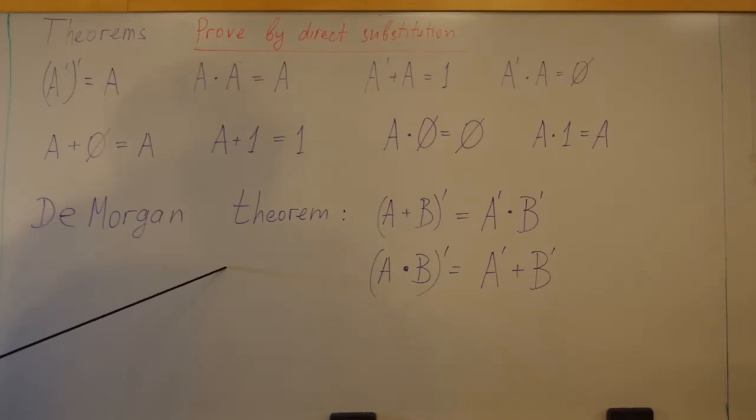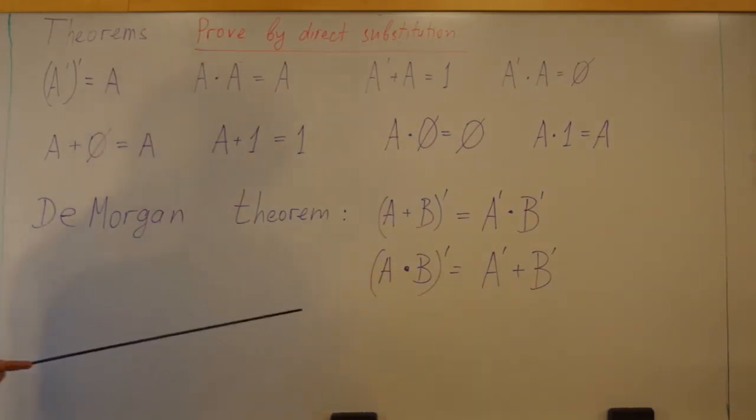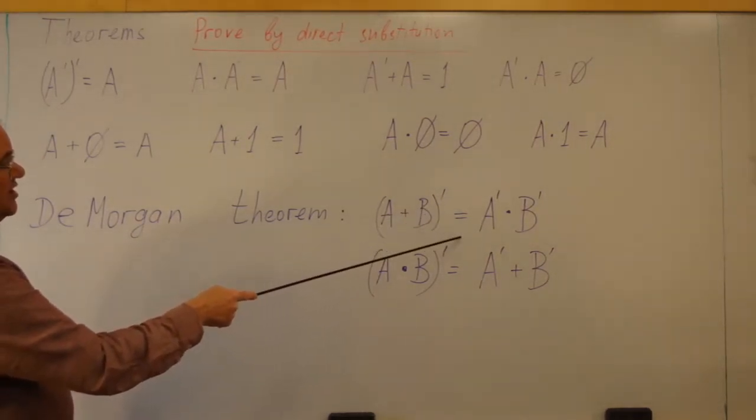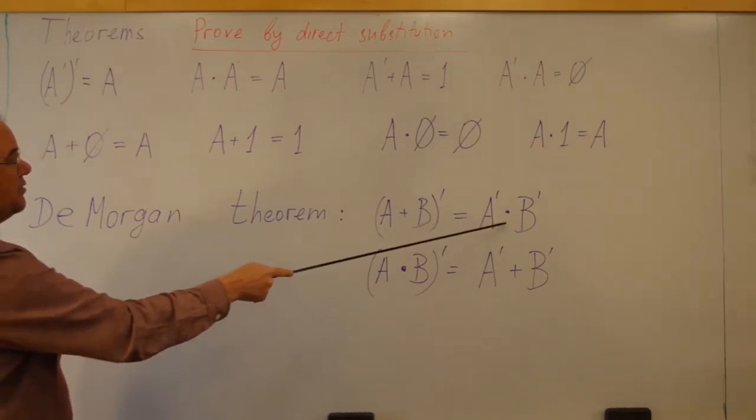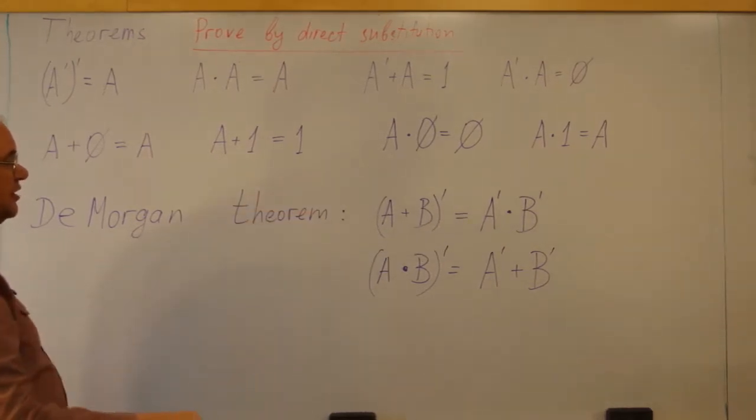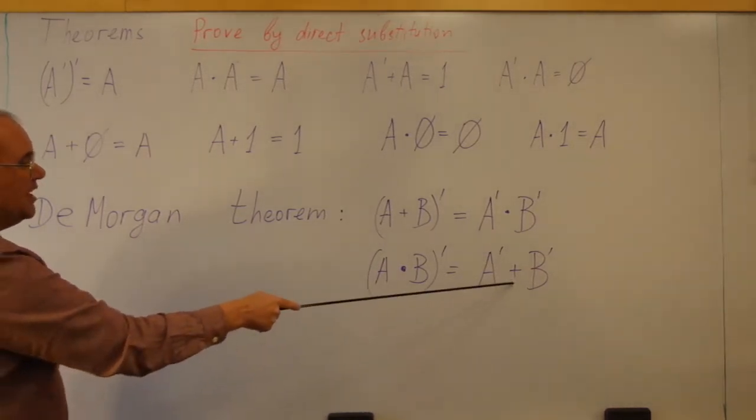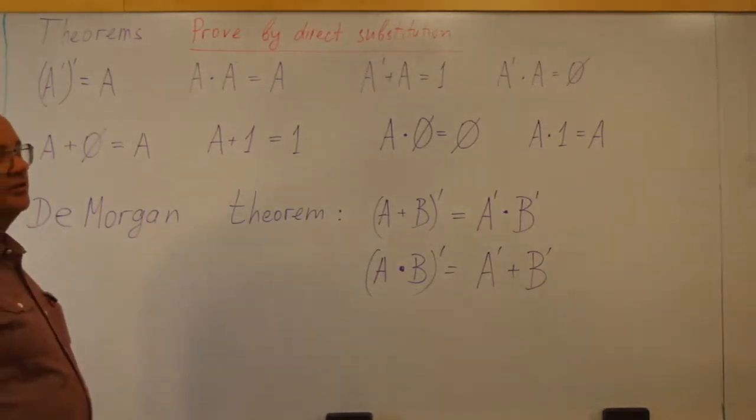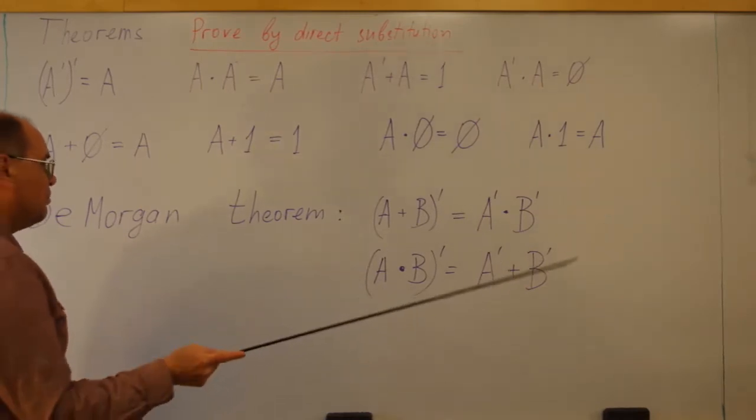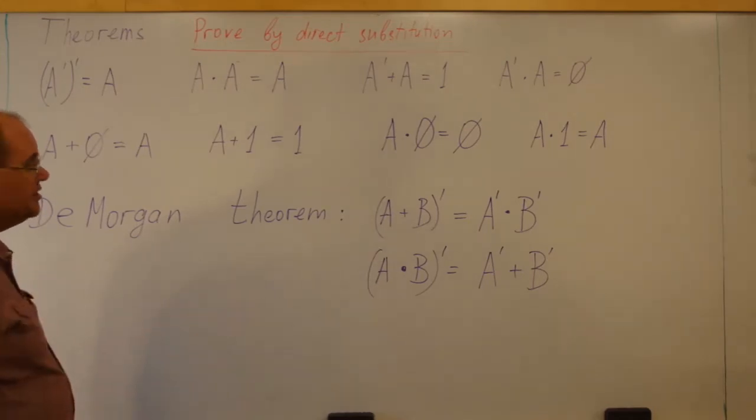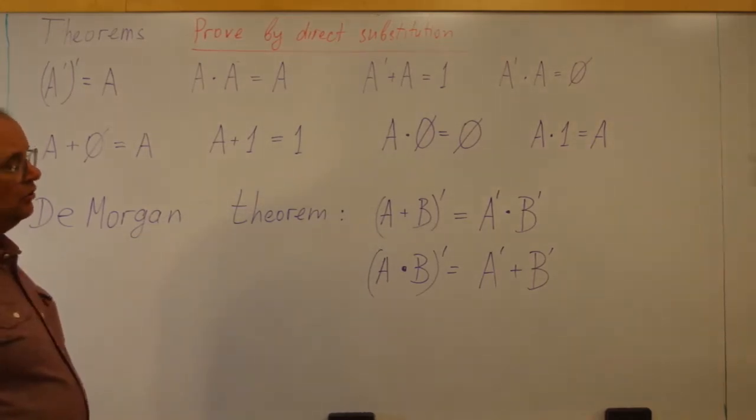A little bit more counter-intuitive is De Morgan's theorem. A plus B inversed is the same as A inverse times B inverse. A times B inverse is the same as A inverse plus B inverse. Proof of this theorem can be done by direct substitution of A's and B's, 0's and 1's, or logical yes and logical no's.